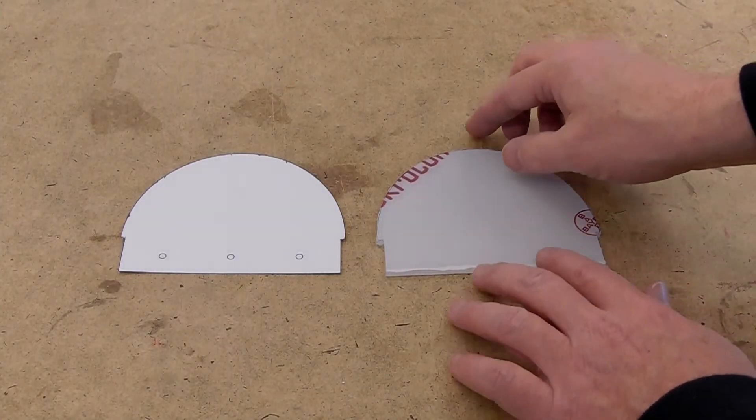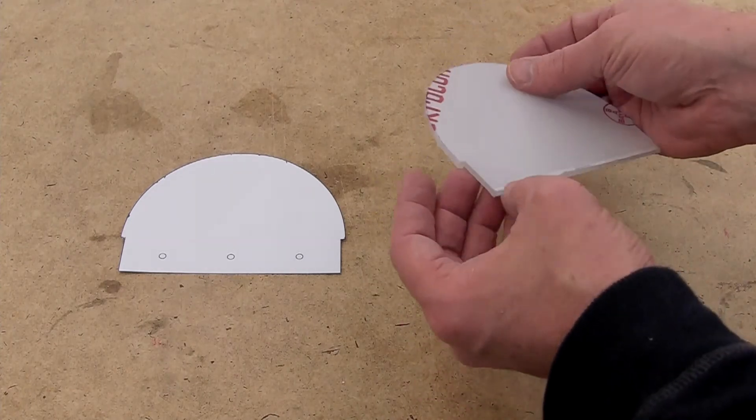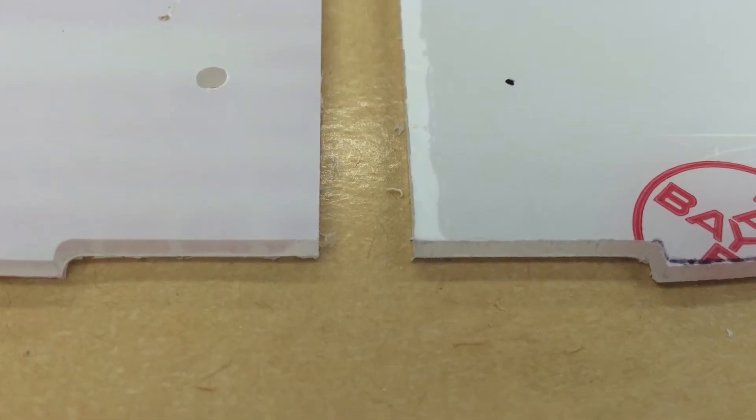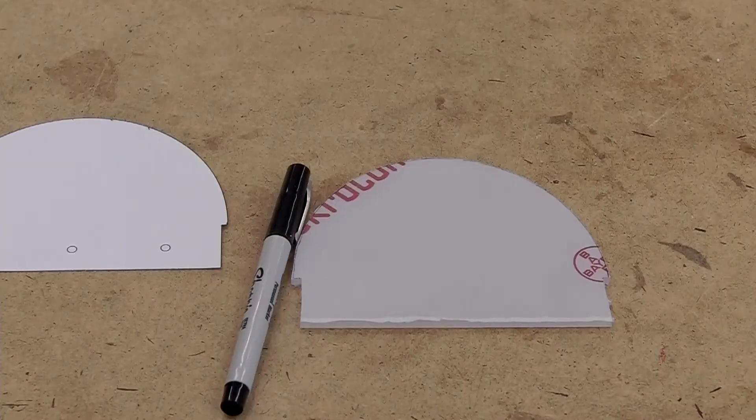And there we go, it comes out pretty nicely even doing it by hand on a scroll saw. On the left you can see the CNC routed piece and on the right the one cut with the scroll saw.